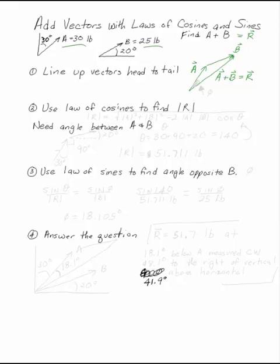Step 2: Use the law of cosines to find the length of that resultant. The law of cosines says that the absolute value of R, the length of R, is the square root of the length of A squared plus the length of B squared minus 2 times the length of A times the length of B times the cosine of the angle in between A and B.